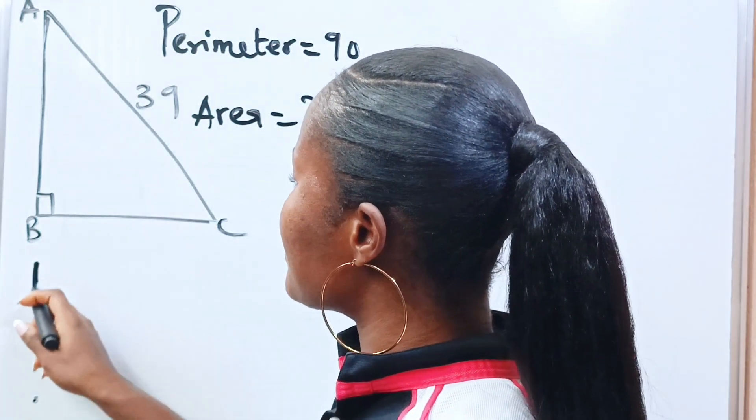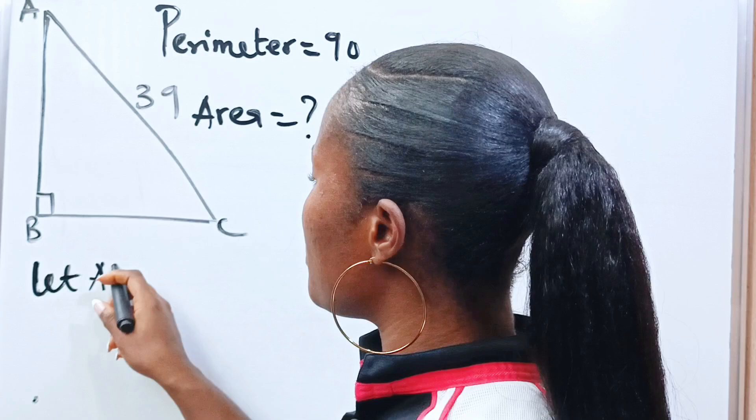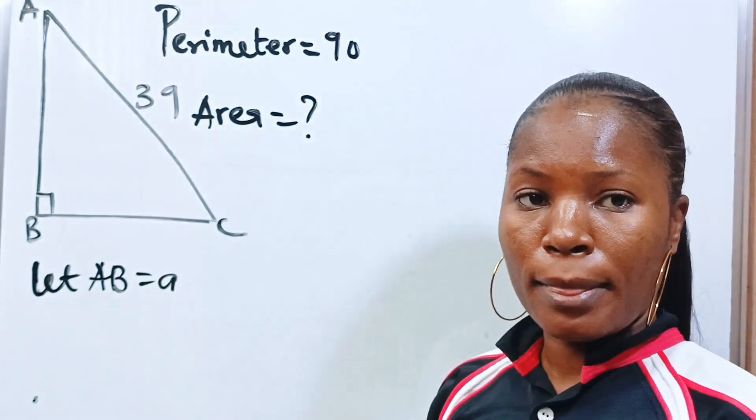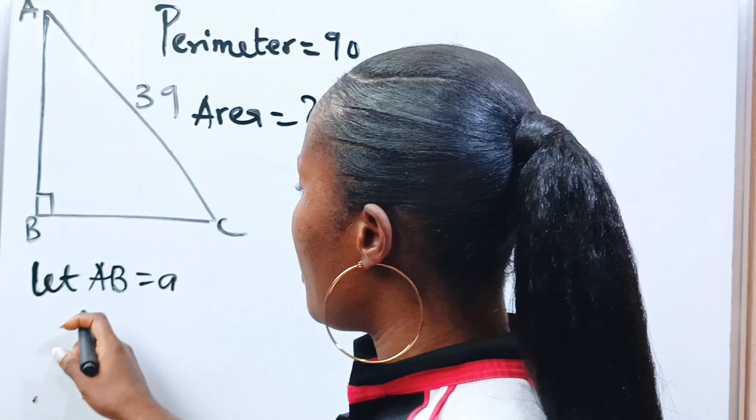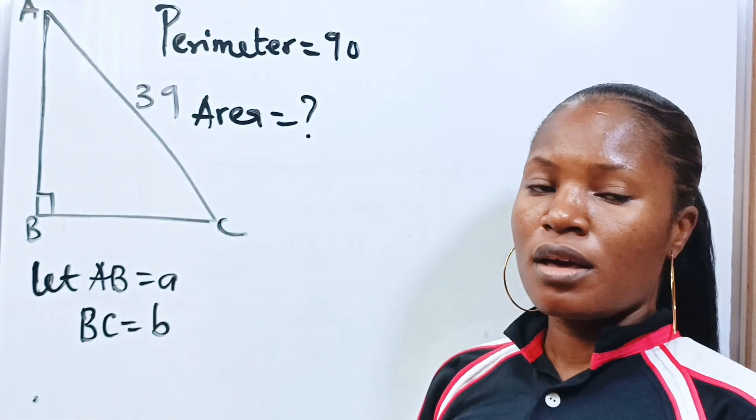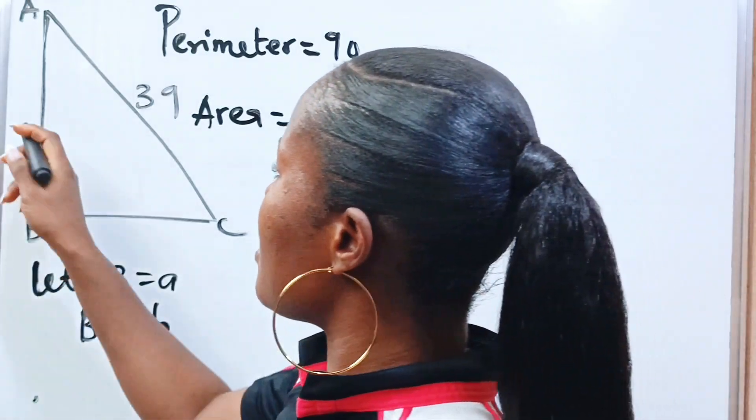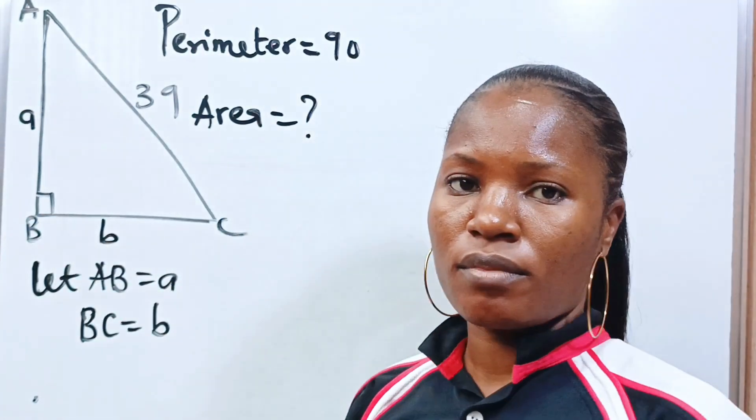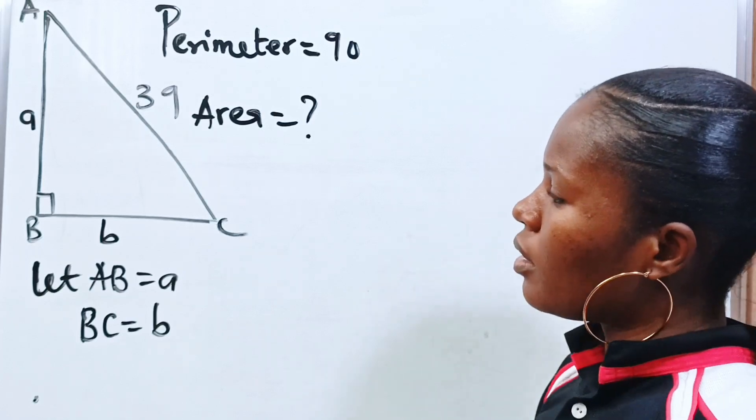Now we can say let AB, line AB be equal to small a, line BC be equal to small b. If we say that, then we can say that this is A and this is B. Right?